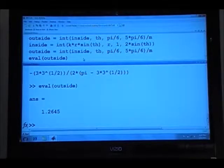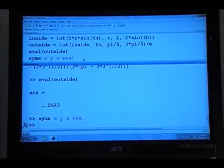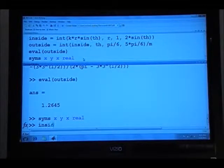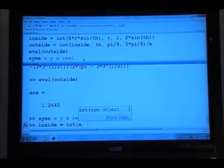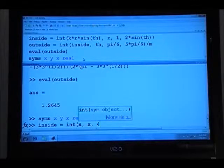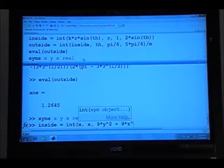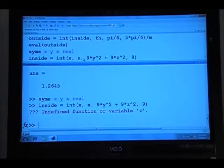Okay, we have MATLAB up and running. So we can hit it with syms x y z real to define all of our variables. And then the inside integral, use the int command. The integrand is x, the variable of integration is also x, the lower limit of integration is x equals 9 times y squared, because we've changed the numbers a little bit from the book, plus 9 times z squared, and the upper limit of integration is x equals 9.